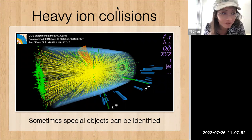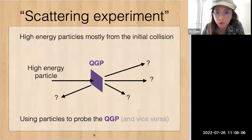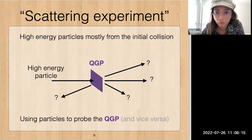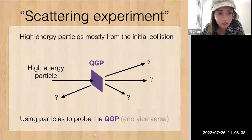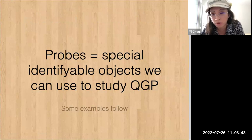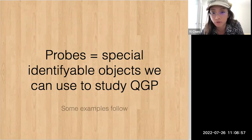What's very interesting about these high-energy particles is that if a particle is sufficiently high energy, they are mostly created from the initial collision in the heavy ion collision. If it's coming from the initial collision, we can think of this as a kind of scattering experiment. The heavy ion produces a high-energy particle, the QGP is formed around it, and the particle essentially goes through the QGP. From this, we can use these particles to probe what's happening with the QGP. The probes are essentially some special identifier or object that we can use to study the quark-gluon plasma.